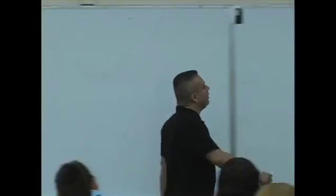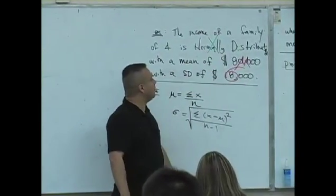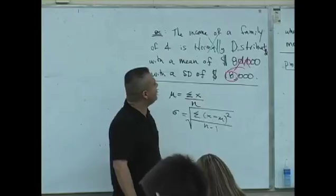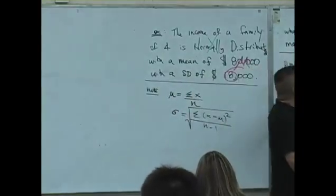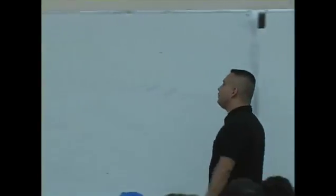X is what? x is a normal distribution. So they're saying, what percent of the families make at least $100,000? That's your X value. The income is $100,000. So this is X.